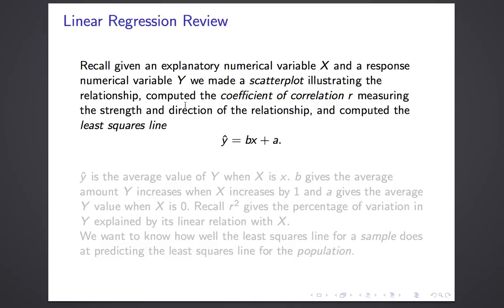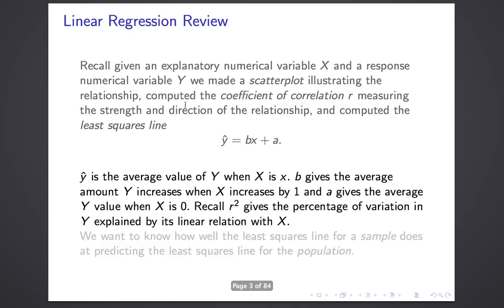We wrote that y-hat equals bx plus a, where y-hat is the predicted value of y — or we will think of it now as the average value of all the y's when x is equal to the particular value x. The slope b tells you the average amount you expect y to increase when x increases by 1, and a, the y-intercept, tells you the average y value when x is 0. Finally, we interpreted r-squared as the percentage of variation in y that's explained by its linear relationship with x.